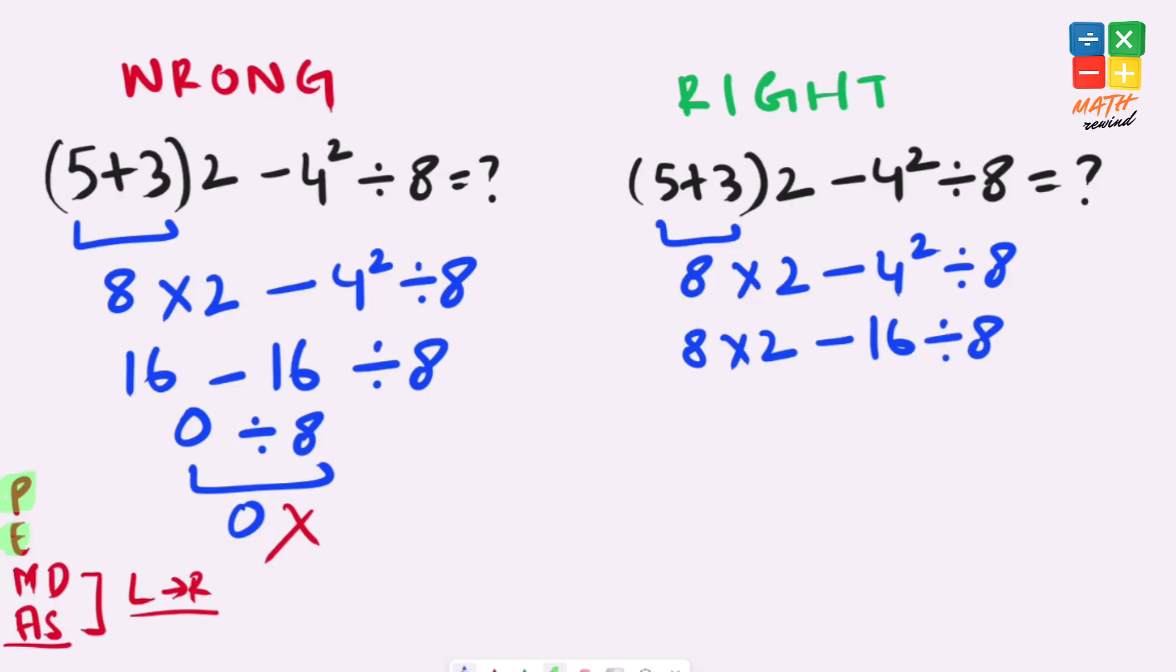Now if you notice we have multiplication, we have subtraction and we have division operators available in this equation. Here according to the rules multiplication and division takes priority over addition and subtraction. Now which one should be solved first? Multiplication or division? Remember we need to work from left to right. So let's start from the left side. 8 times 2 is 16 minus 16 divided by 8.